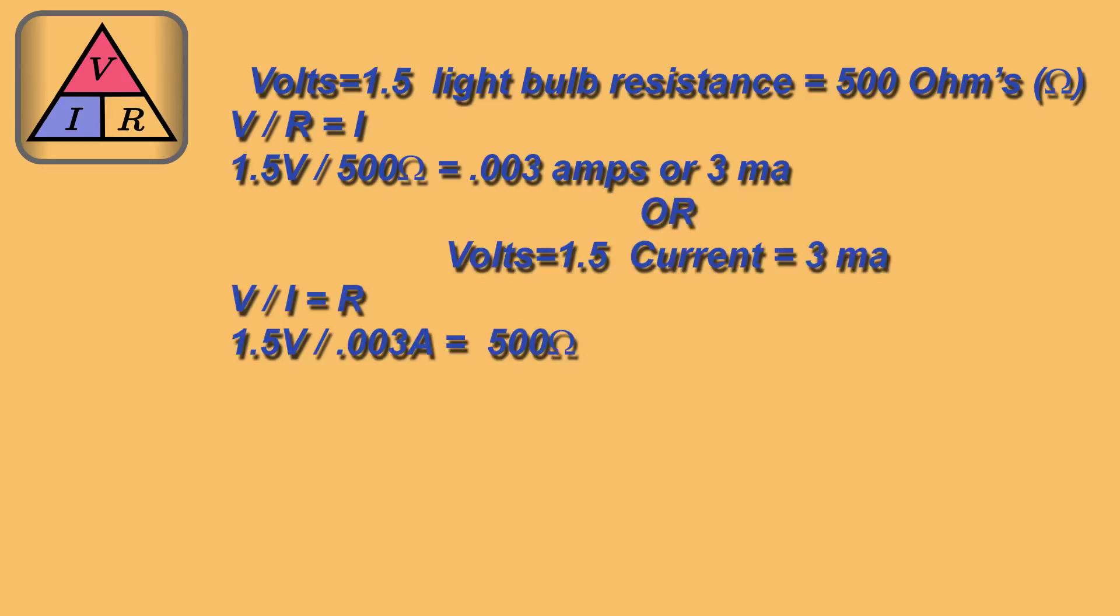Now let's just say, for example, we know the volts and the current, but we don't know the resistance of the light bulb. In that case, we use V over I, which will equal R. In our example, 1.5 volts over 300 milliamps equals 500 ohms. So we then know that our bulb is 500 ohms.